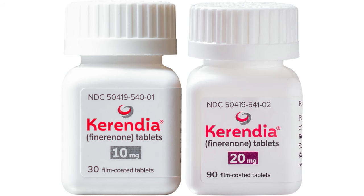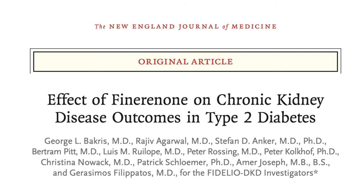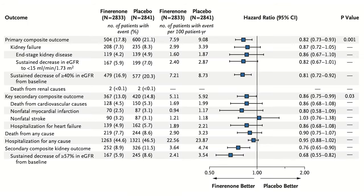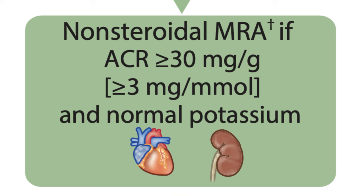The third class is MRA — specifically finerenone, a non-steroidal MRA. It does not cause gynecomastia. It reduces blood pressure and albuminuria in patients with chronic kidney disease. Trials showed that finerenone reduced the risk of renal failure and reduced cardiovascular death, non-fatal MI, stroke, and heart failure hospitalization. So finerenone is recommended as an addition to renin-angiotensin system inhibitors in patients with type 2 diabetes and chronic kidney disease. We will elaborate more on finerenone in coming episodes.